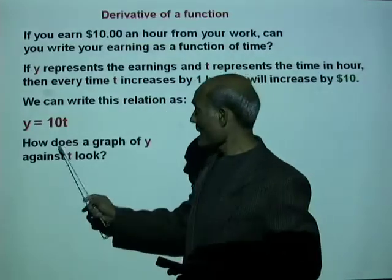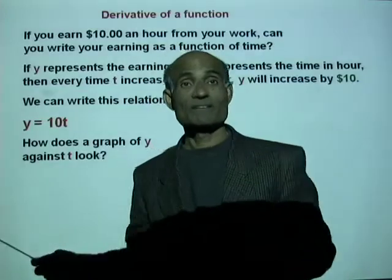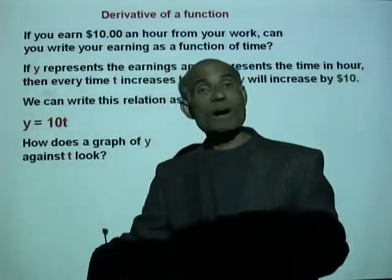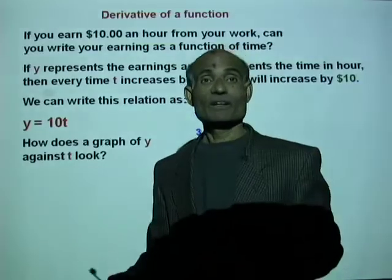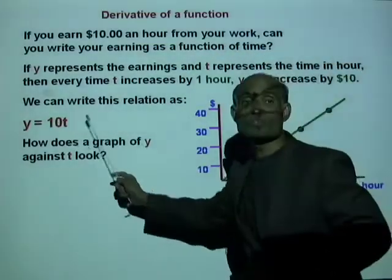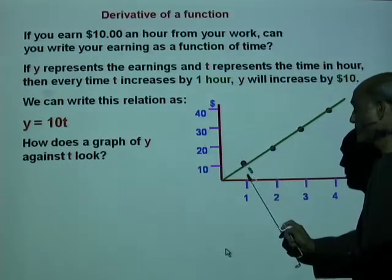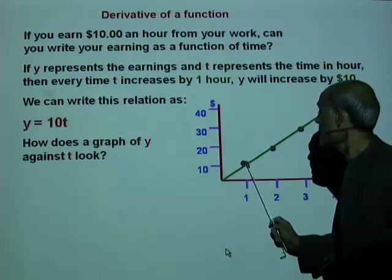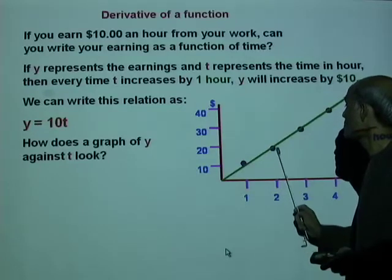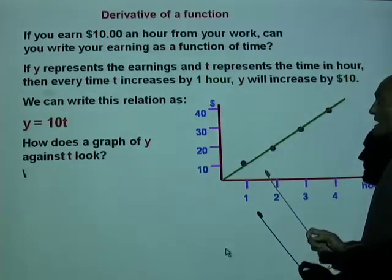How does the graph of y against time look like? It's a very common function — y equal to mx. If you draw the graph of y equal to ten t, it will look like this: when t equals one hour, y equals ten dollars; t equals two hours, y equals twenty dollars, and so on.